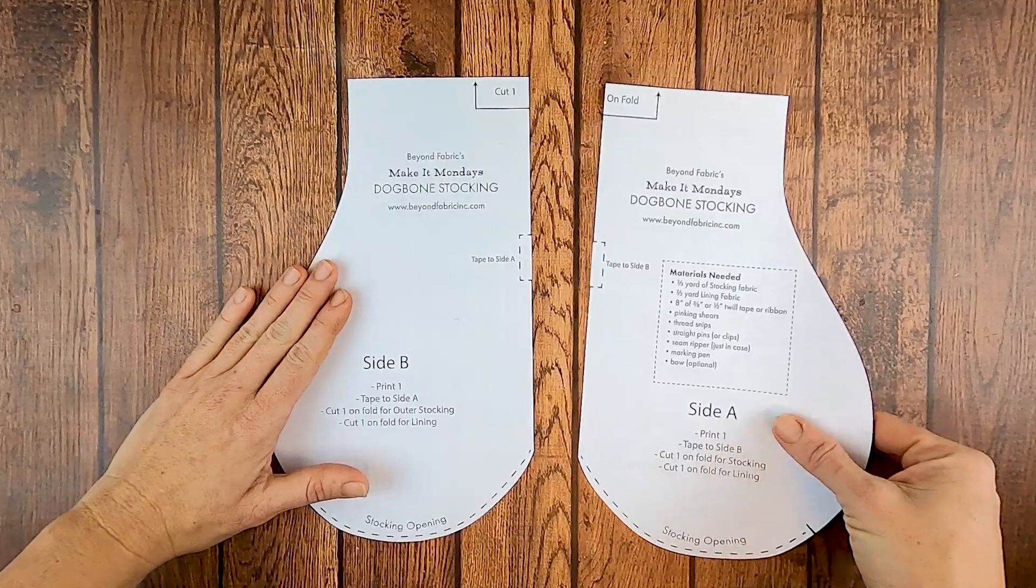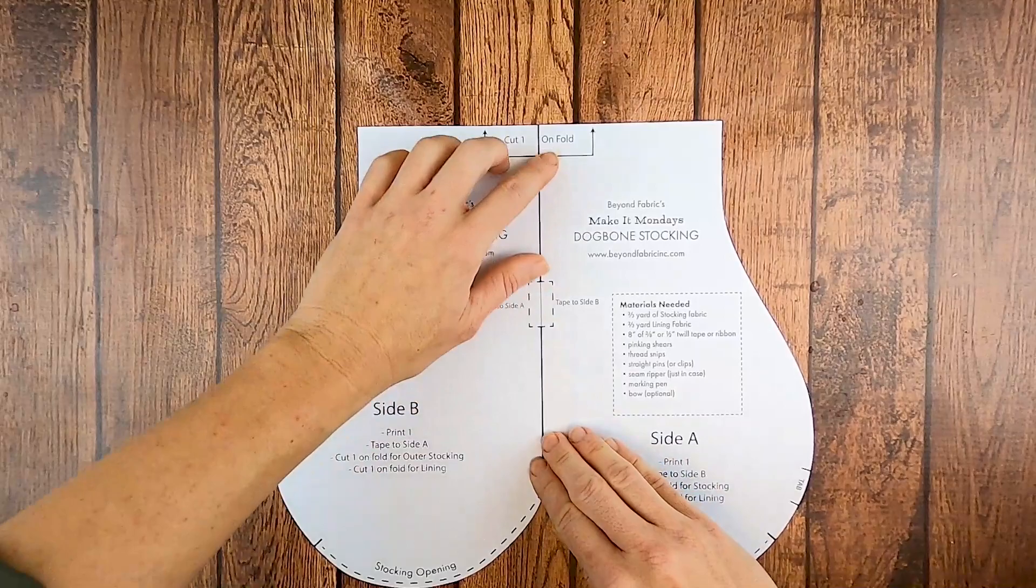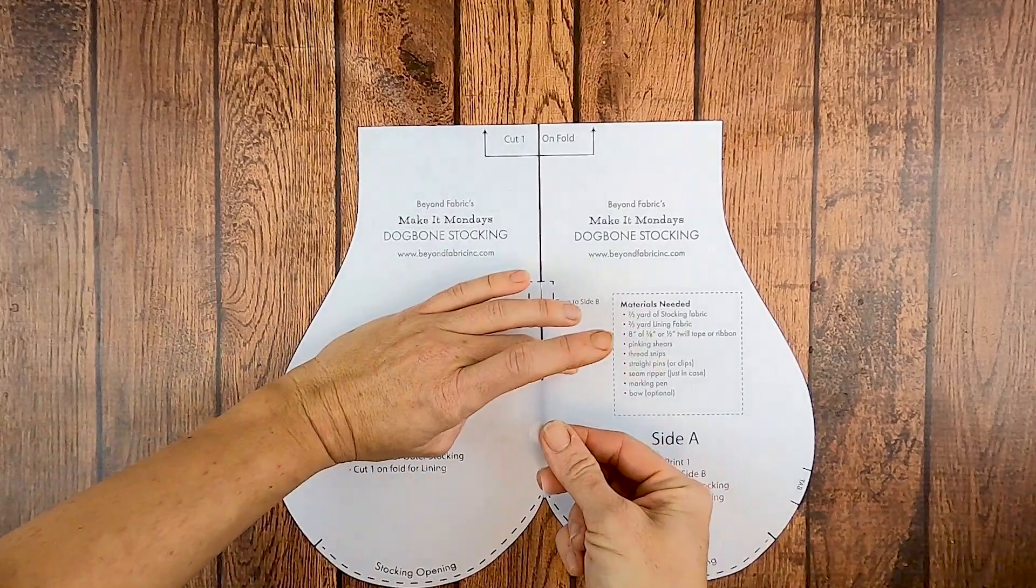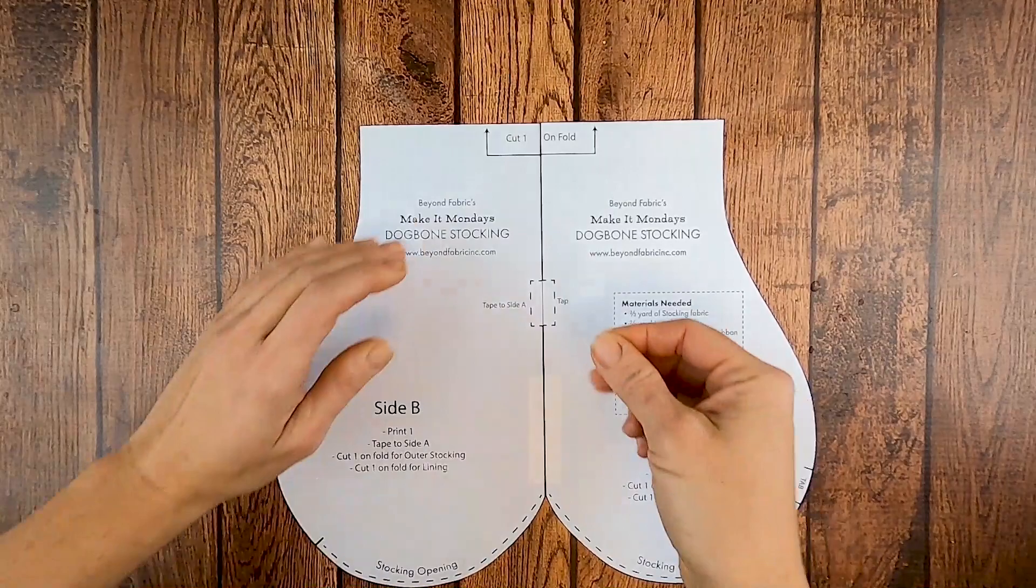Okay, so here we are with our two pieces of our pattern, side A and side B, and we are just going to match them up right there. There's no overlap or anything, and you'll need some tape and just tape your pattern together.